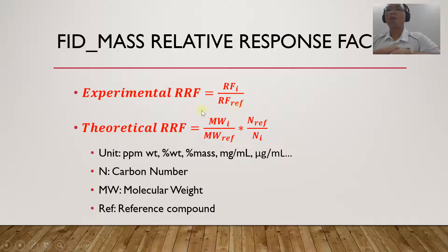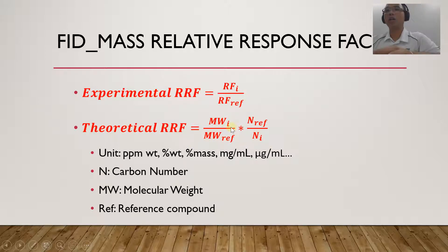You also have something like a theoretical RF. The theoretical RF is something we know beforehand, even before running an experiment. It is specifically defined as the molecular weight of the compound divided by the molecular weight of the reference compound, times the carbon number of the reference divided by the carbon number of that compound.